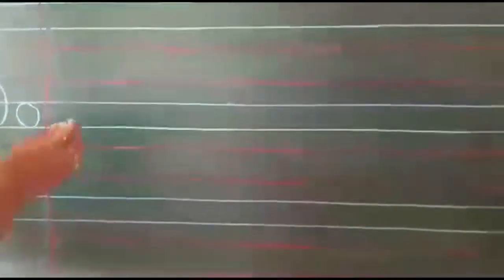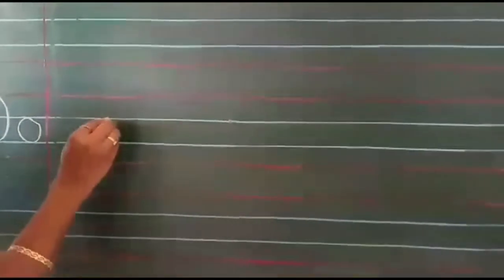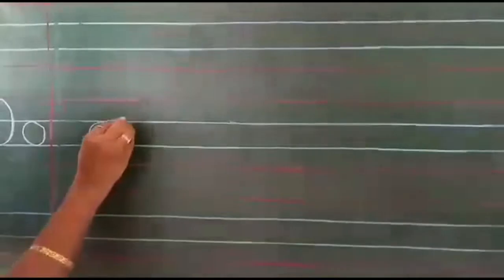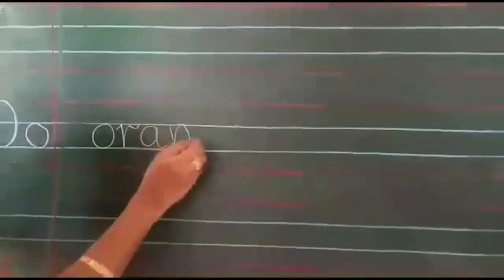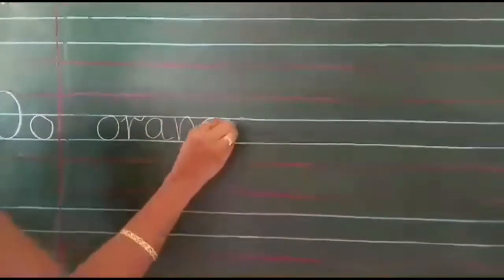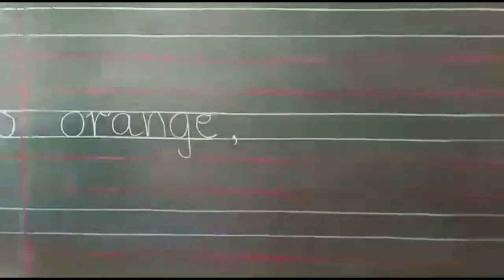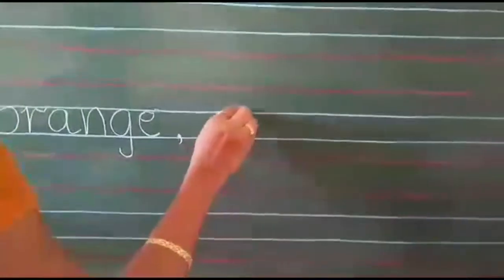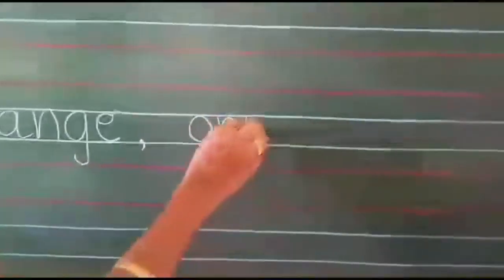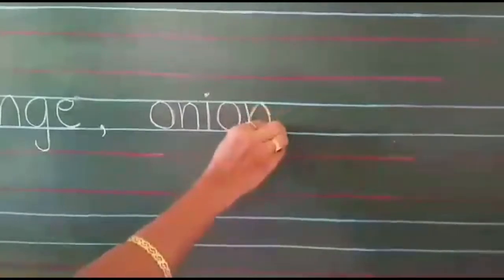So we will write the spelling of orange: O, R, A, N, G, E — orange. Comma. Onion: O, N, I, O, N — onion. Okay.